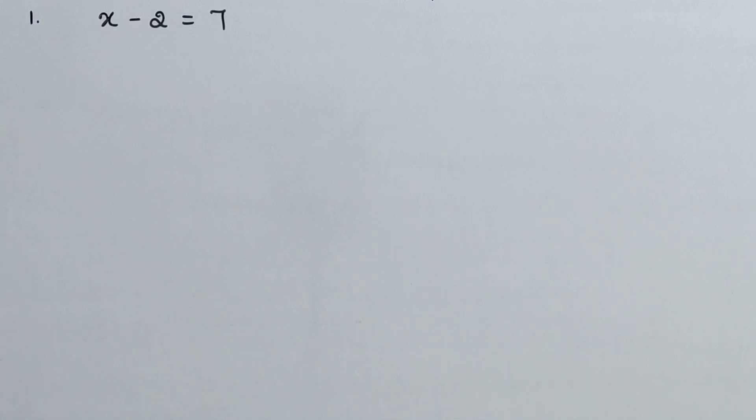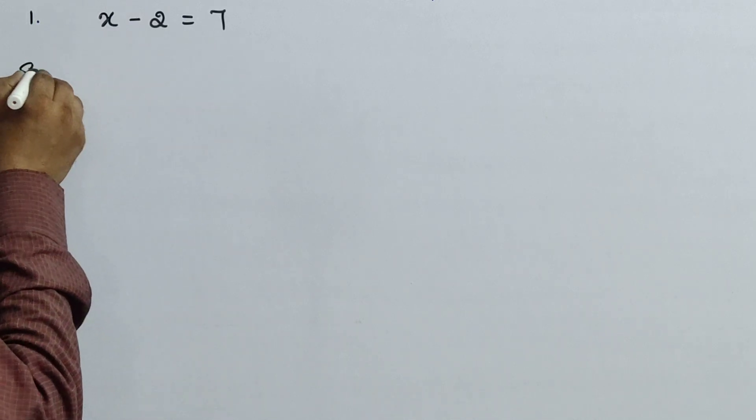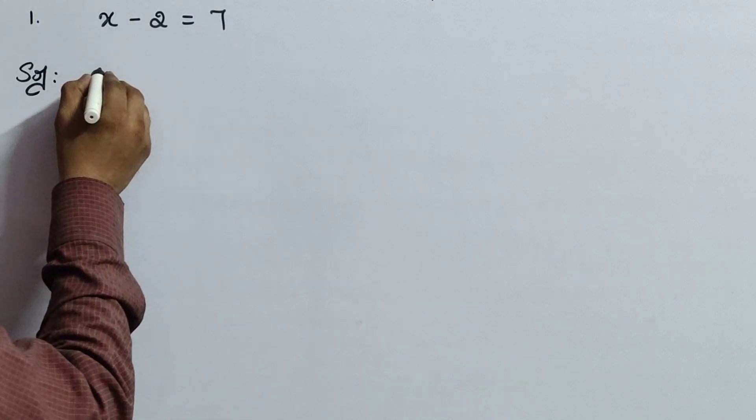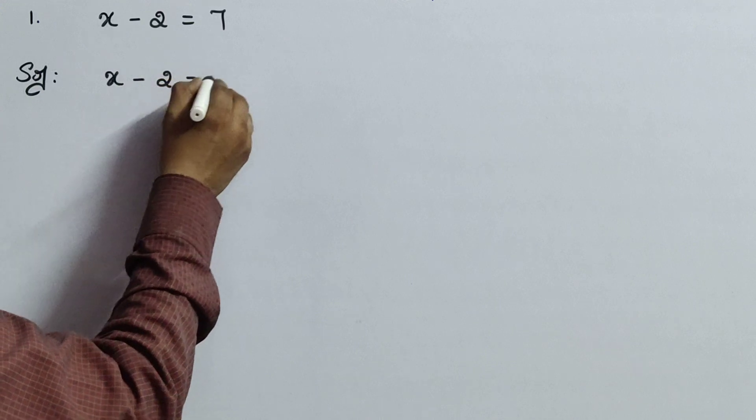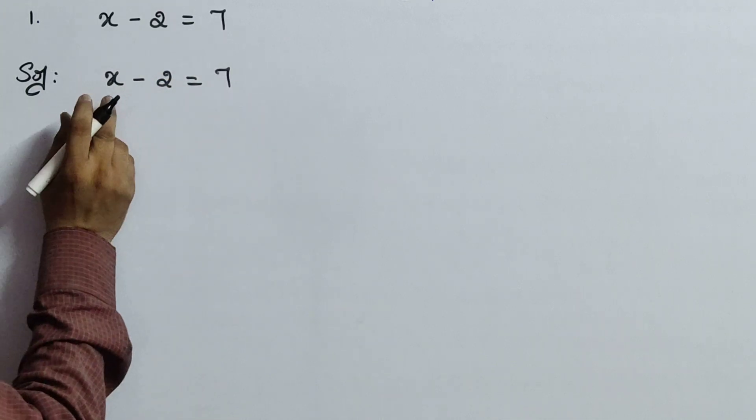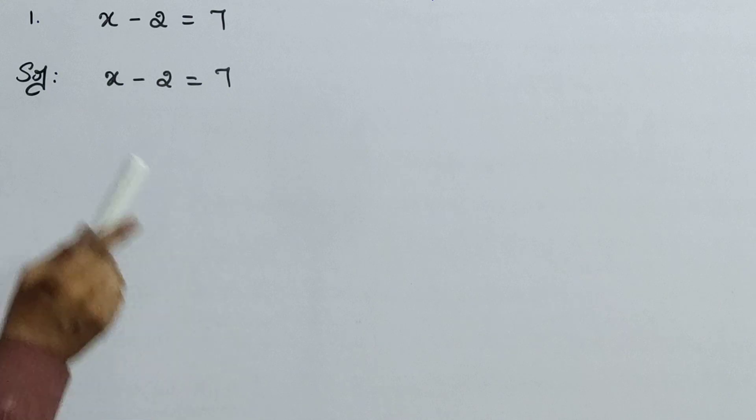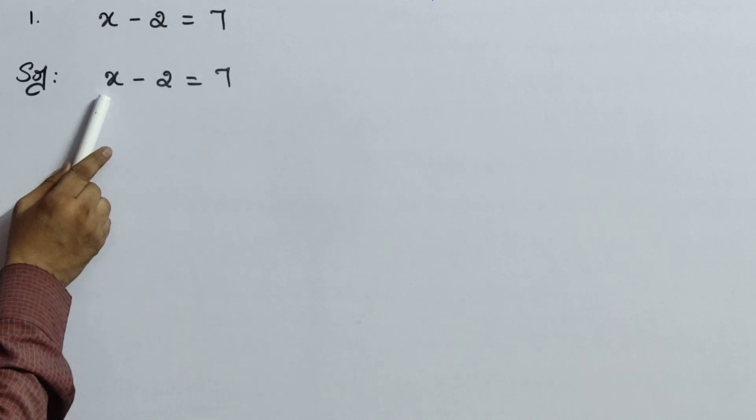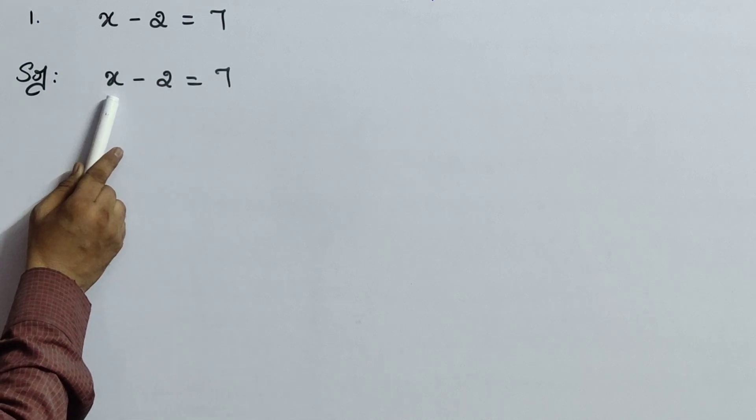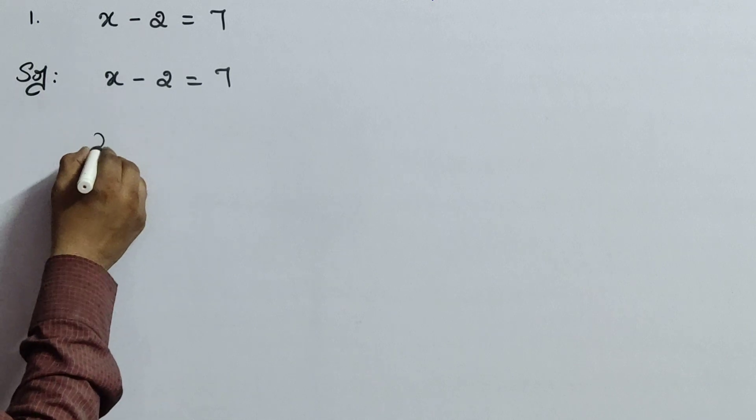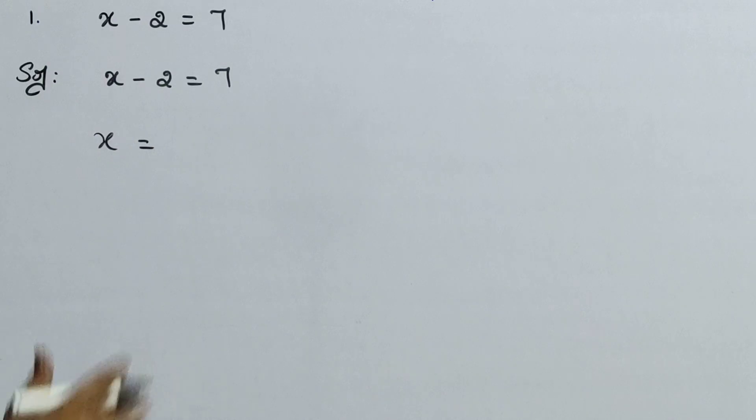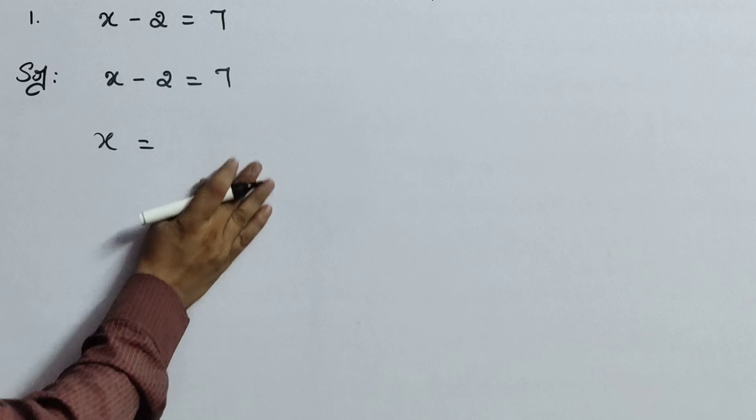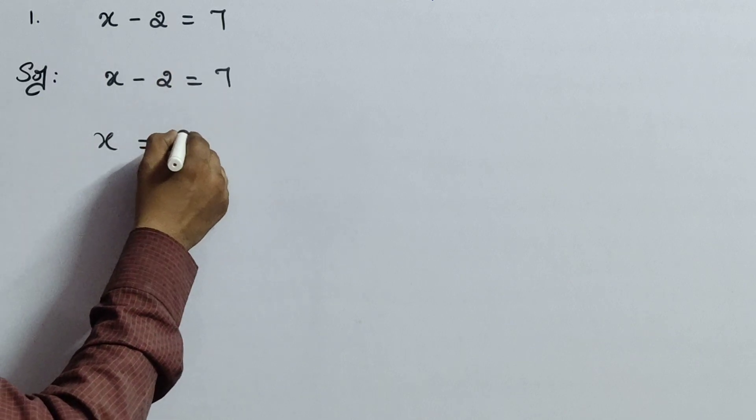The first question is x minus 2 equals to 7. Now how to solve it? First write the question what we have given: x minus 2 equals to 7. That means now here our target is to find the value of x. Now x equals to, that side what are there? First you write, you will never get confused. Equal to, after what is there? You write first. What is there? 7.